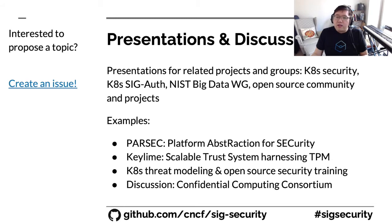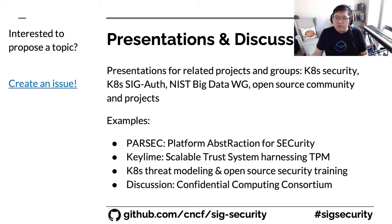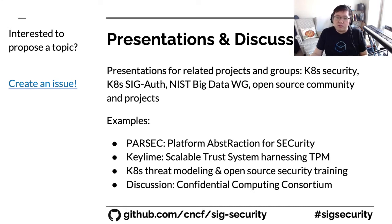On top of that, we have several discussions and these topics are brought in by community members. This could be technical — for example, we once talked about the management and rating of CVEs for cloud native projects — to discussions about how we can collaborate on certain topics. Recently, members of the Confidential Computing Consortium, the CCC, came to discuss what they were doing and also explore avenues to collaborate with parts of the cloud native ecosystem.